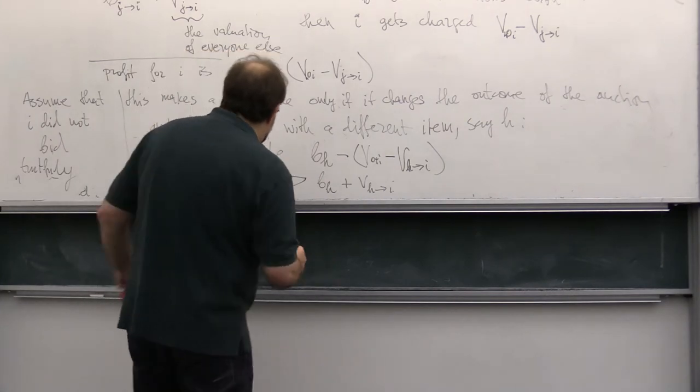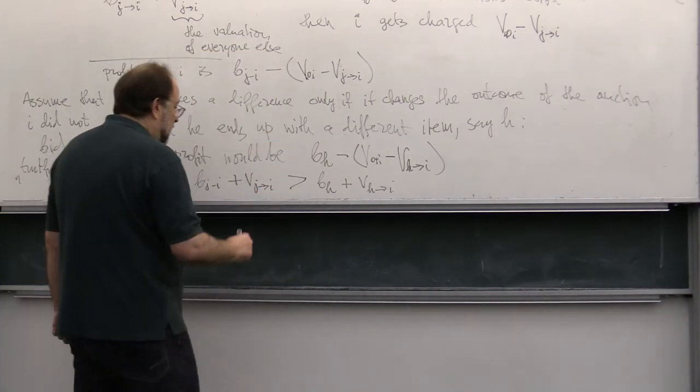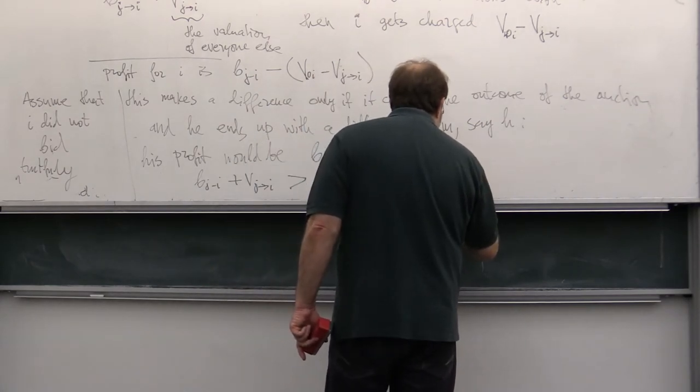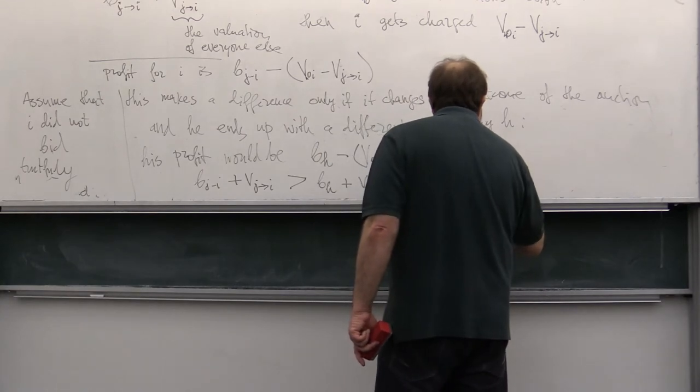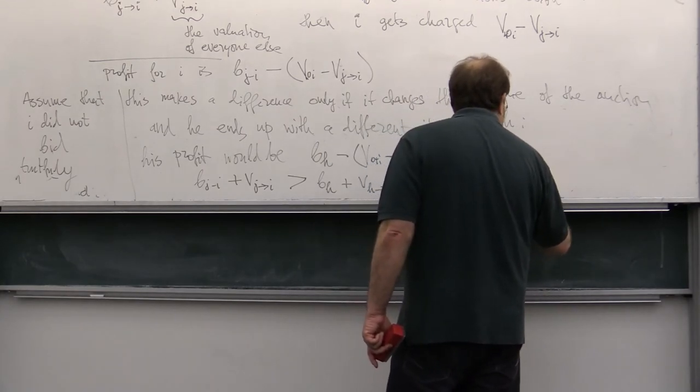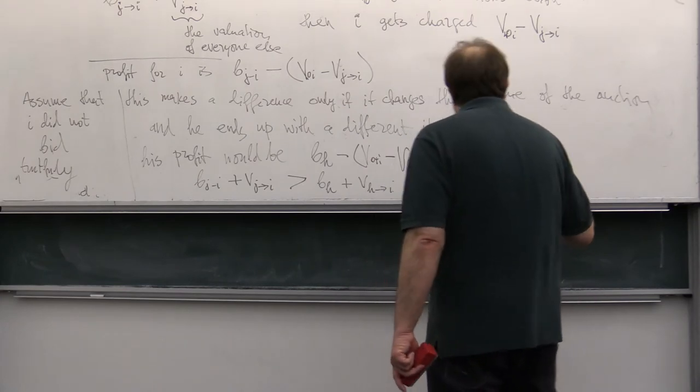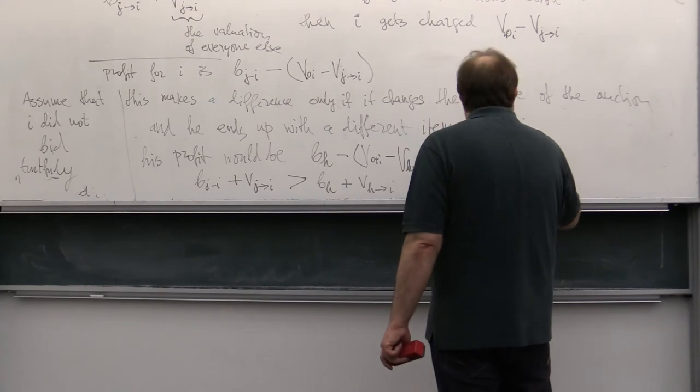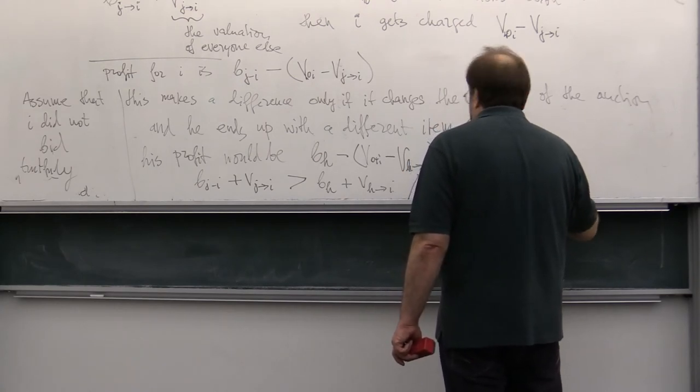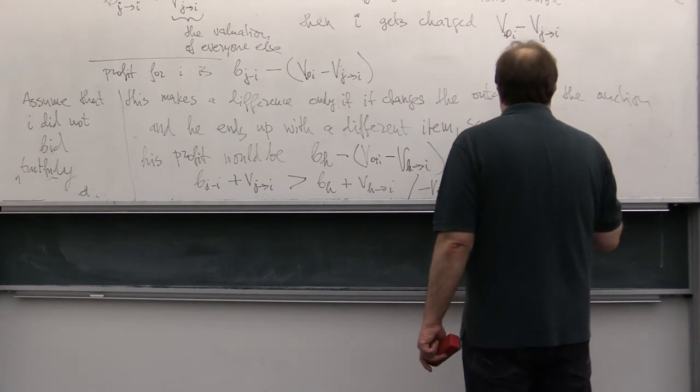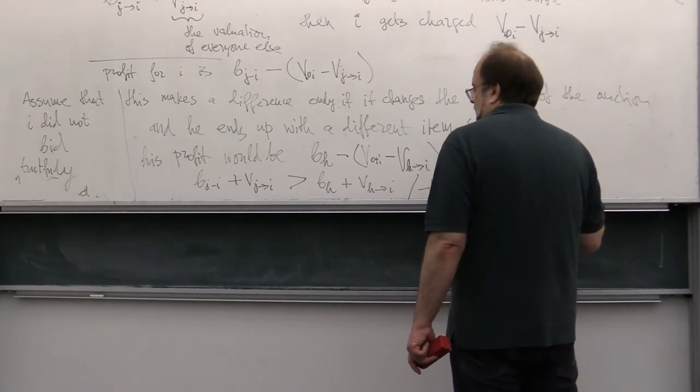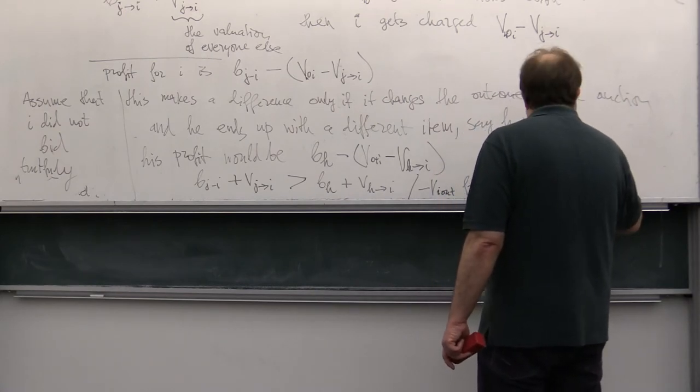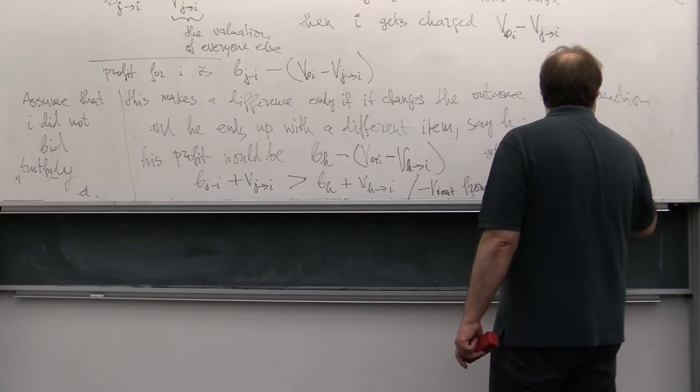If this is the case, if I subtract now from both sides, so minus V out I from both sides, and I get that VJ goes to I plus VJ goes to I minus V0.